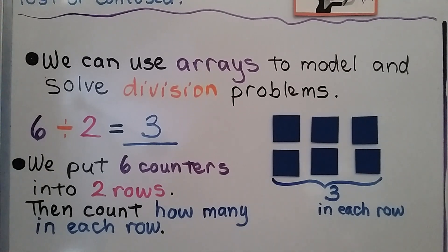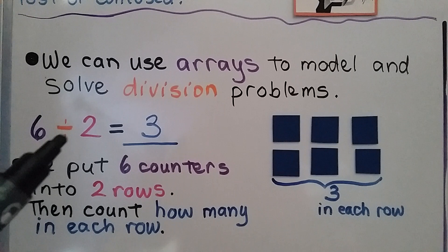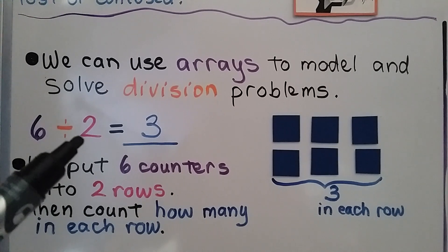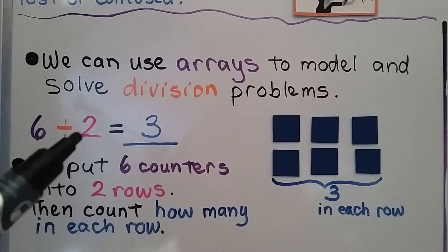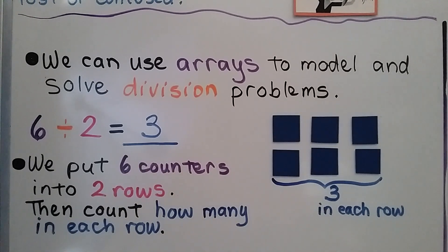6 is how many we have in all, and it's divided into 2 rows — 2 groups — with 3 in each group.